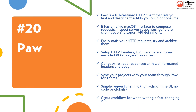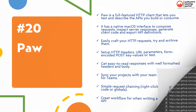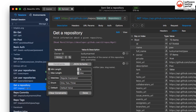The last tool in our list is PAW. PAW is a full-featured HTTP client that lets you test and describe the APIs you build or consume. It has a native macOS interface to compose requests, inspect server responses, generate client code, and export API definitions. You can easily craft HTTP requests, set up HTTP headers, URL parameters, form-encoded POST key values, or text. You get easy-to-read responses with well-formatted headers and body, sync projects with your team through PAW for Teams, simple request chaining, and a great workflow for fast-changing APIs. Here is the request builder and response section of PAW.